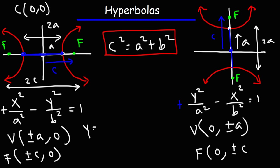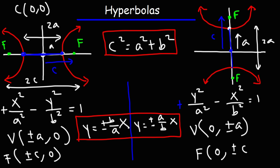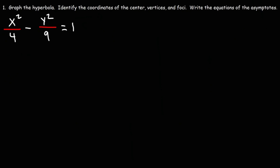Now let's talk about the equation of the asymptotes. For the horizontal hyperbola, it's y equals plus or minus b over a times x. For the vertical hyperbola, it's y equals plus or minus a over b times x. This is true when the hyperbola is centered at the origin. The equation is different if the center is not at the origin, and we'll talk about that later in the video.